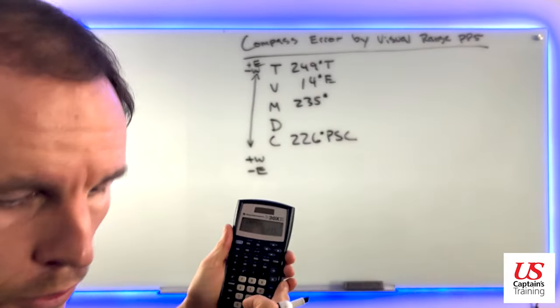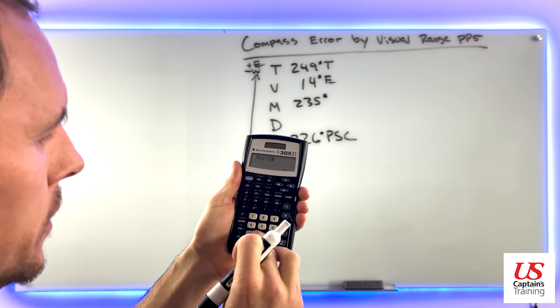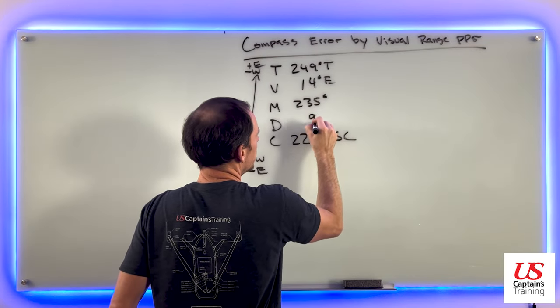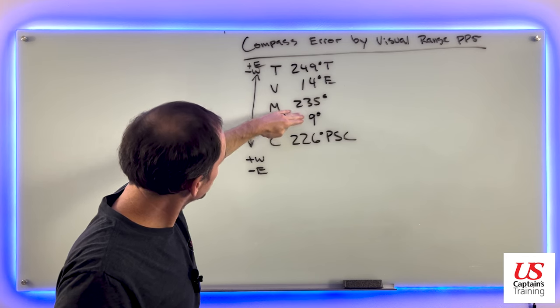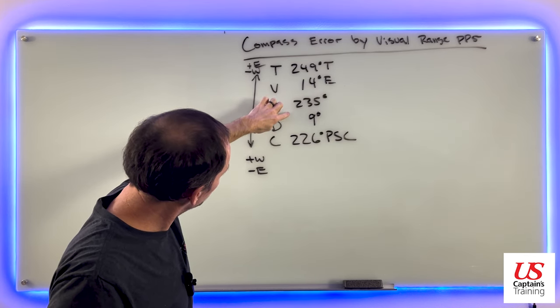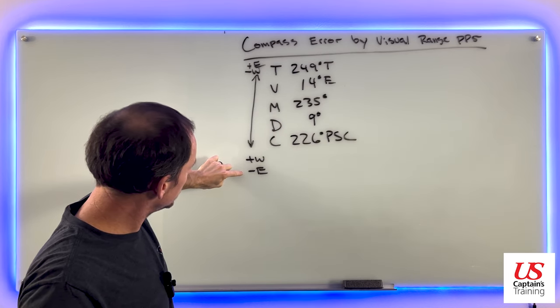We could just say 235 minus 226 equals nine degrees. So it's nine degrees difference. Is it east or west? If we're going from 235 to 226, we must be subtracting nine. That means it's east.